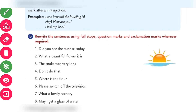Did you see the sunrise today? — question mark. What a beautiful flower it is! — exclamation mark. The snake was very long — full stop. Where is the flower? — question mark. Please switch off the television — full stop. What a lovely scenery! — exclamation mark. May I get a glass of water? — question mark.